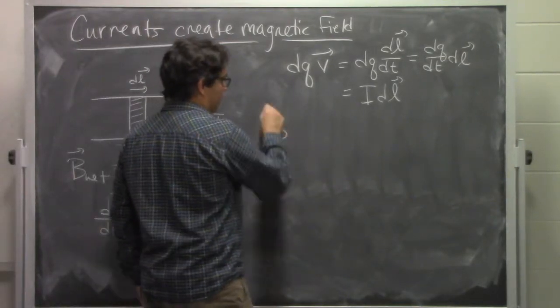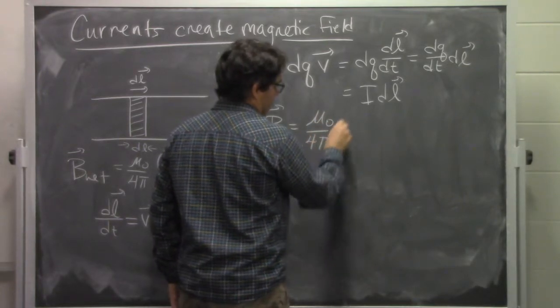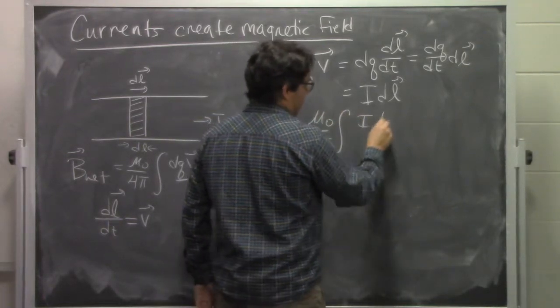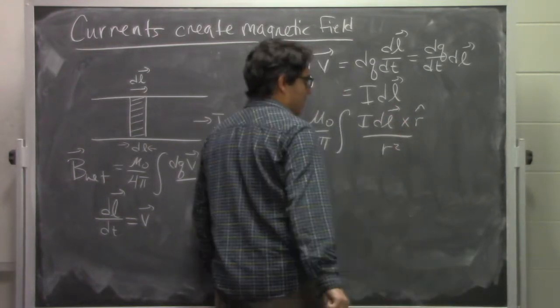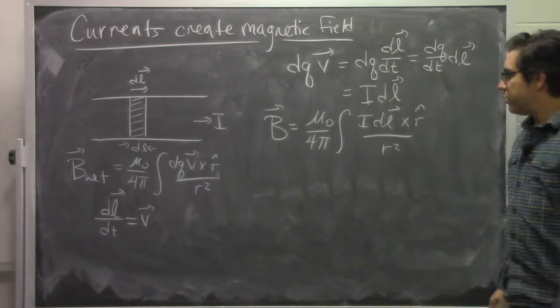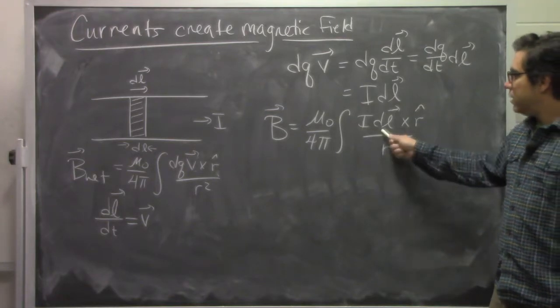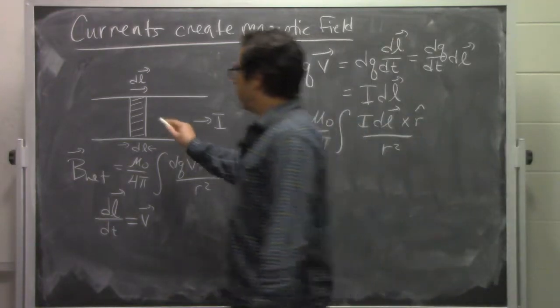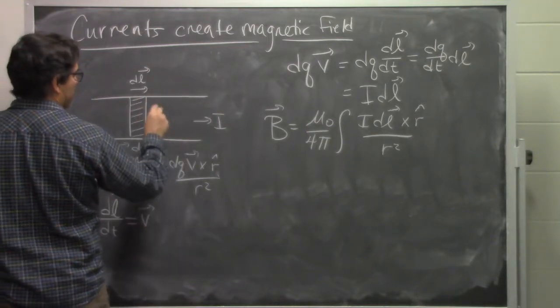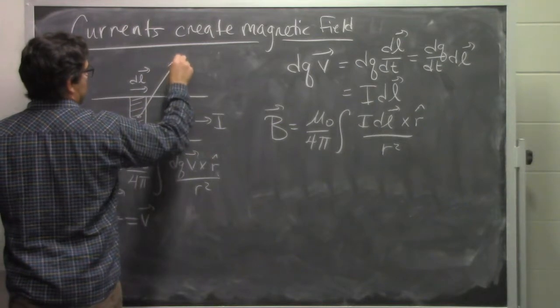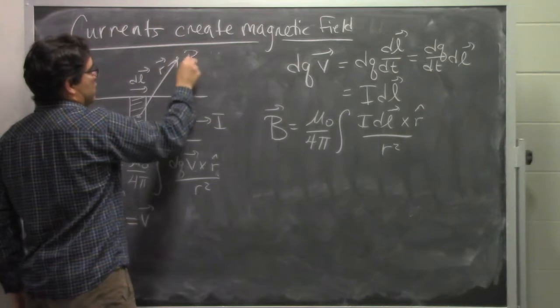Our model for the magnetic field for a wire like this is mu naught over 4 pi times the integral I DL cross r hat over r squared. Mu naught over 4 pi is a constant, I is whatever this current is, DL is the little sliver that we are tracking that points in the direction of the current, and r is the vector that points from that little sliver to the location that we care about finding the magnetic field at.